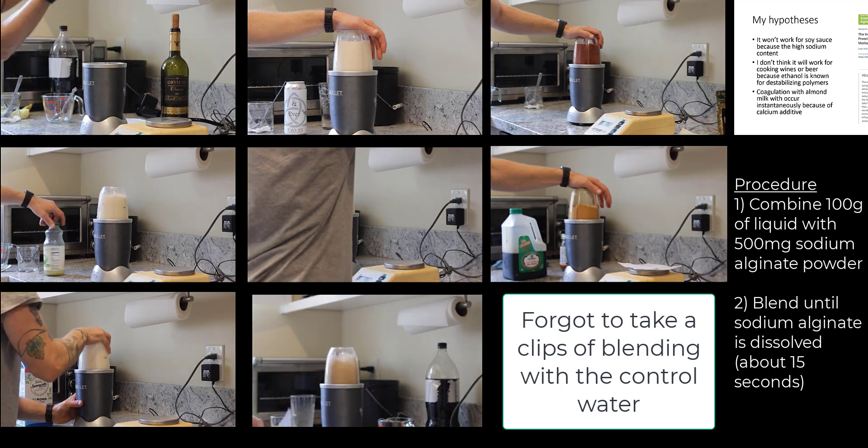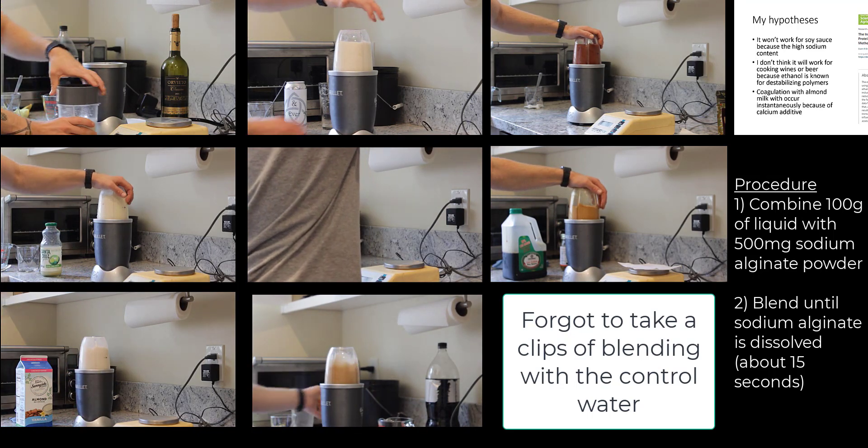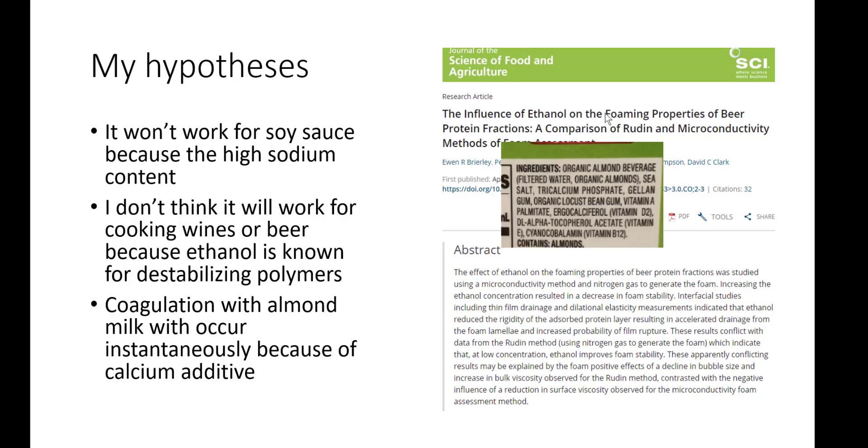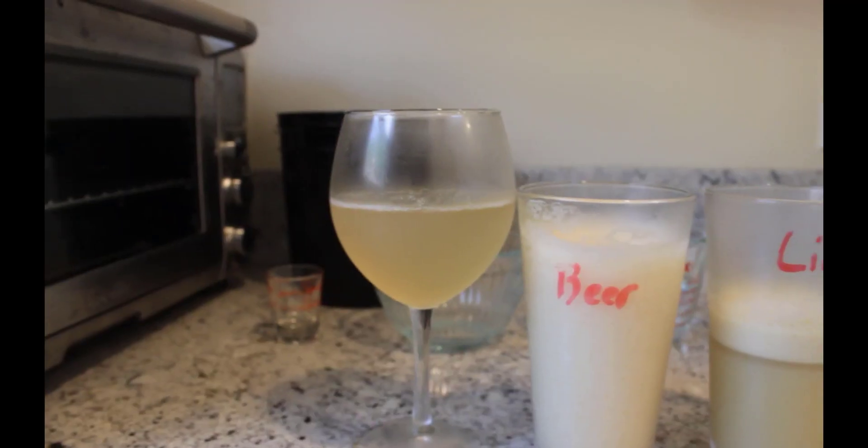I also don't think this is going to work perfectly with the almond milk because I think coagulation will occur immediately whenever the alginate is added, and this is because, if you look at the ingredients, tricalcium phosphate is already added in there. That potentially means that the calcium reaction with the alginate is going to occur instantaneously in this media. But let's find out!